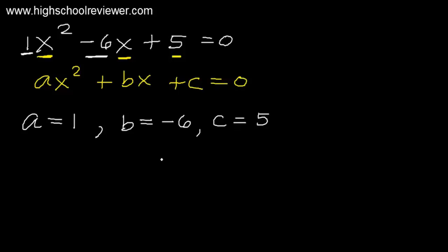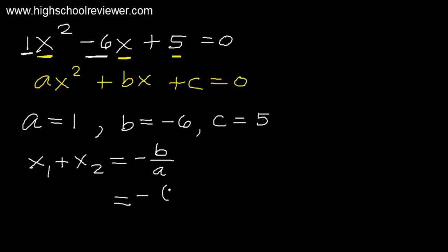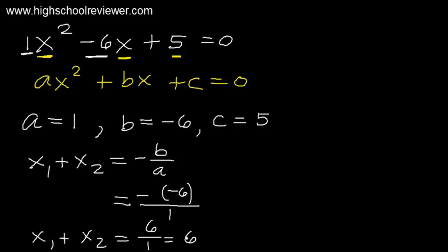Now we get the sum of the roots. The sum of the roots, x₁ plus x₂, uses the formula negative B all over A. Substituting: negative of negative 6, divided by positive 1. Negative times negative is positive, so this gives positive 6 over 1, which equals 6. So x₁ plus x₂ equals positive 6.